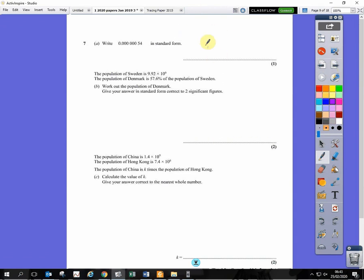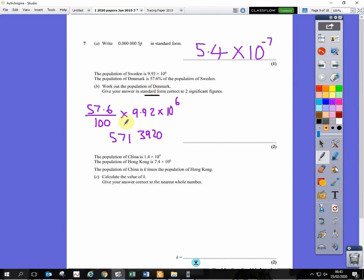Next, this one is standard form. So 5.4 times 10 to the power of. So it starts here and it goes backwards to this point. If you count there, there's seven spaces. Because we're going backwards, it's negative 7. The population of Denmark is 57.6%. So it's 57.6% out of 100 times 9.92 times 10 to the power of 6. And when you type that into the calculator, we end up with 5713920. Round this to two significant figures and in standard form. Two significant figures is here. So the number would be 57 and then 00000. Write this in standard form: 5.7 times 10 to the power of 6.